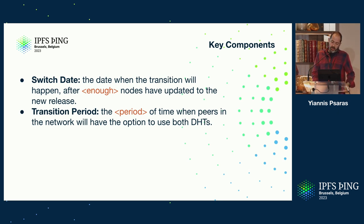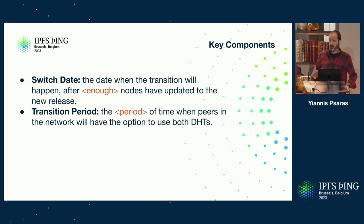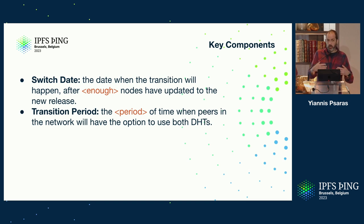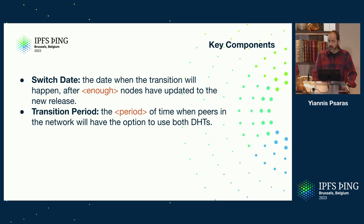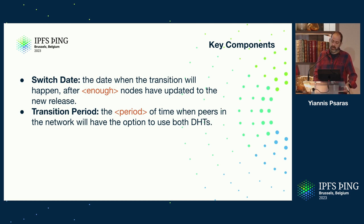A couple of other parameters: the switch date is when we see that enough peers have upgraded and we're ready to do the switch. And the transition period — something quite important — is the period of time when peers in the network will have the opportunity to use both DHTs. It would be risky to just deprecate the old one all at once, because we don't think everyone will be in front of their laptop to upgrade at that specific moment. The exact transition period is tricky to set, but we need to get there.